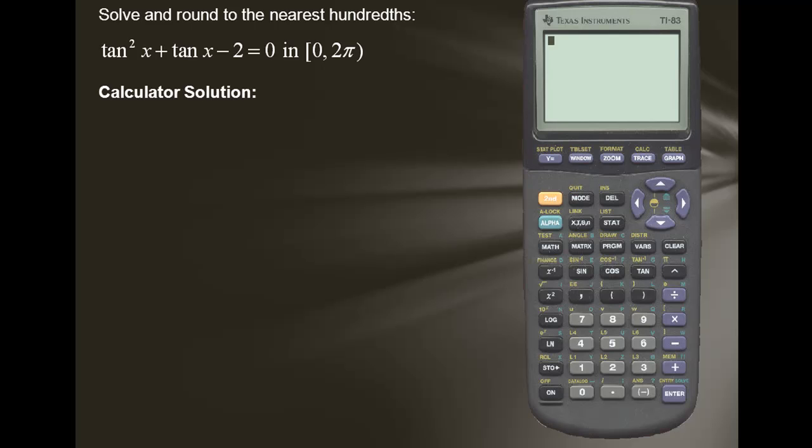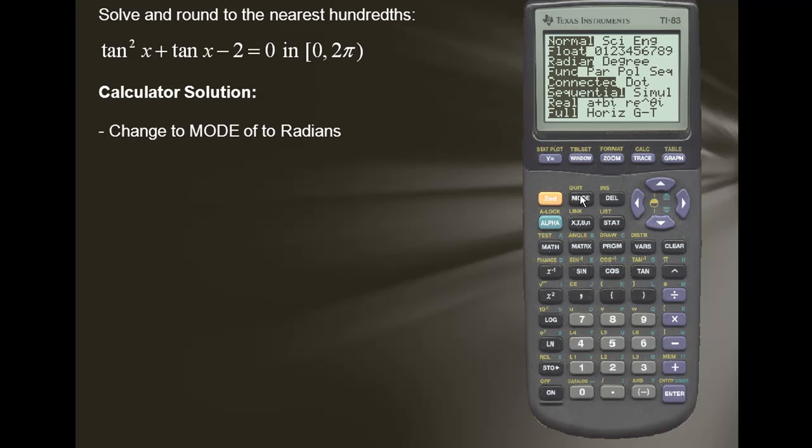Here's the calculator solution. First we'll change the mode of our calculator to radians, so we'll enter the mode area. We'll scroll down to radian. If radian is not selected, you'll select it and press enter.